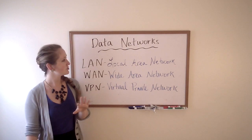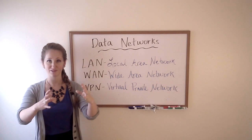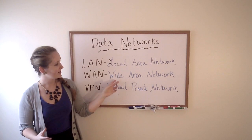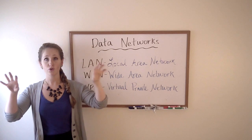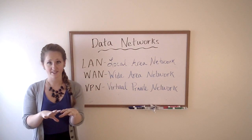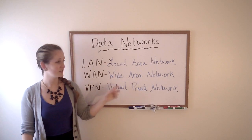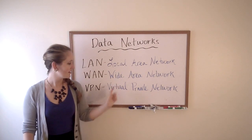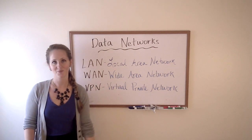So just to review: a local area network is a group of computers connected close to each other. A wide area network and a virtual private network are two or more local area networks that have been connected over long distances. The wide area network accomplishes this by renting a line from an internet company, and a virtual private network does it over the internet.